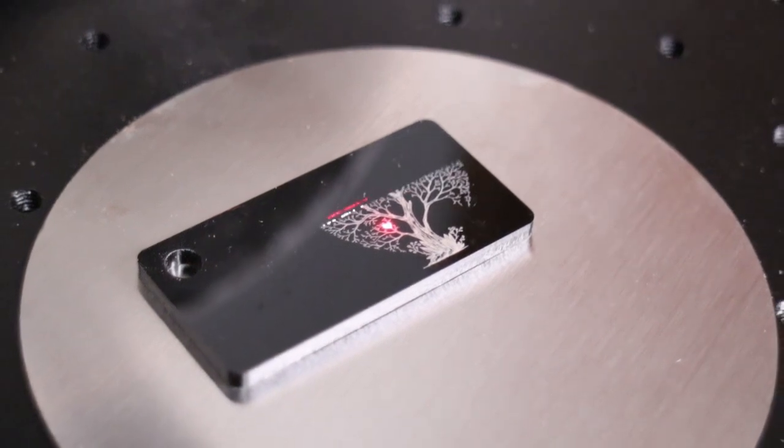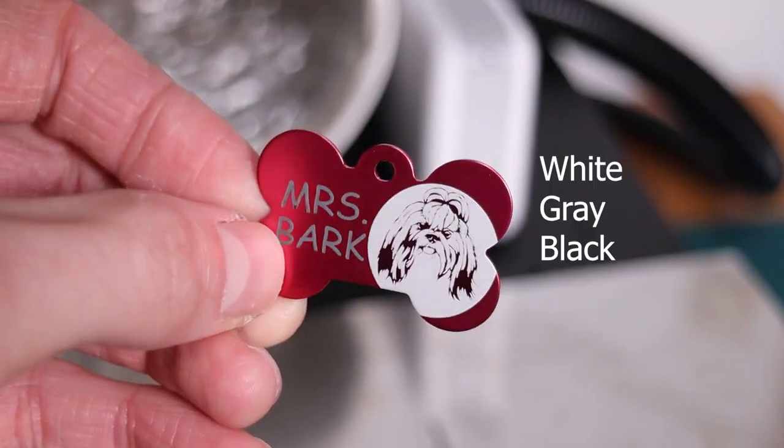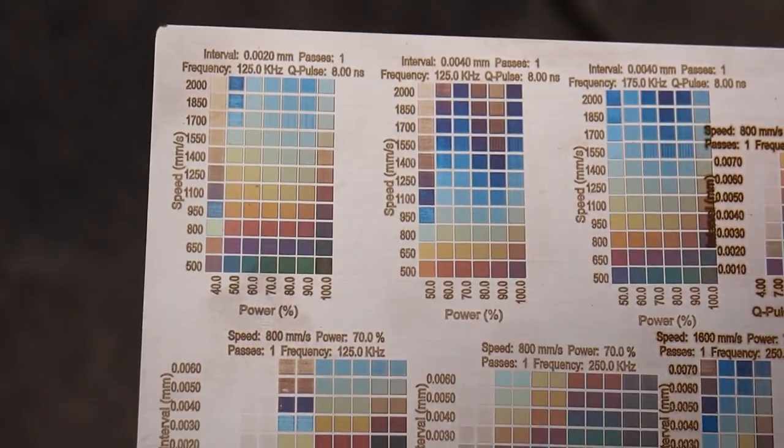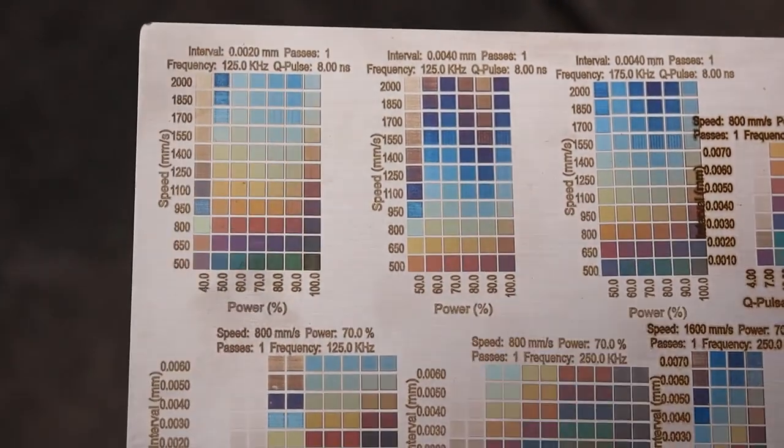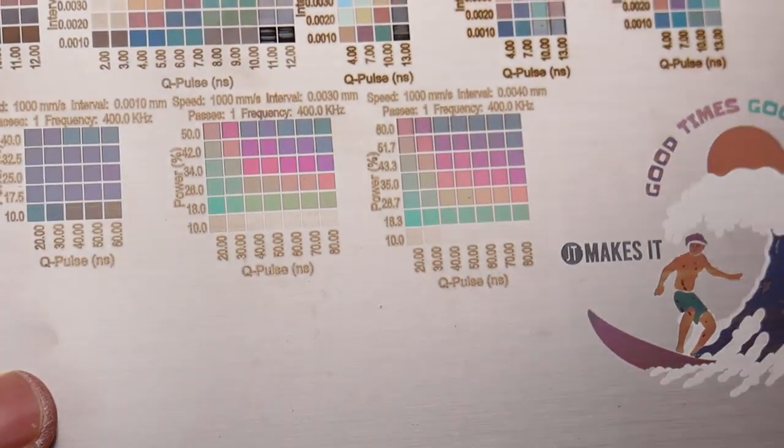It can produce both white and dark engravings on different surfaces, thanks to its highly adjustable JPT Mopa laser source. Particularly noteworthy is its performance on stainless steel and titanium, where it can achieve intricate engravings in a spectrum of vivid colors.